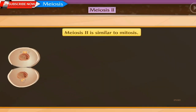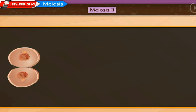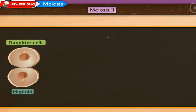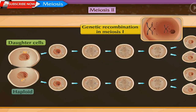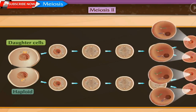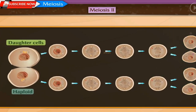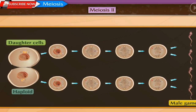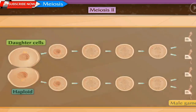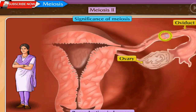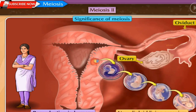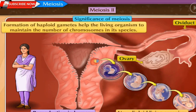Meiosis II is just like mitosis. In this stage, the two haploid daughter cells formed in meiosis I undergo division and finally four haploid daughter cells are formed. Since there was genetic recombination in meiosis I, all four daughter cells are genetically different from the mother cell and from each other. These cells transform into gametes, which are always haploid with N number of chromosomes. During fertilization, a male haploid gamete joins a female haploid gamete and a diploid zygote is formed, which divides and grows into a new diploid living organism. Formation of haploid gametes helps living organisms maintain the chromosome number of their species.